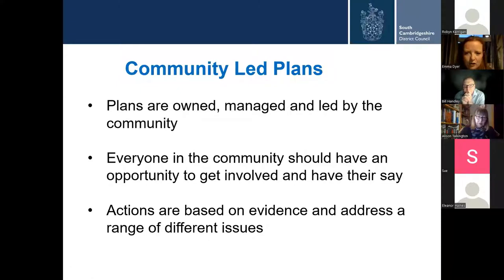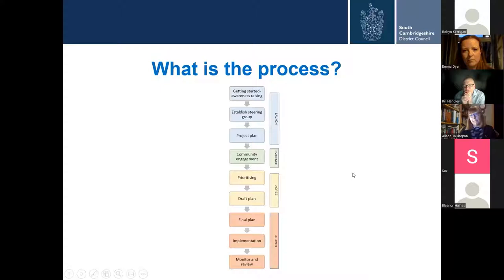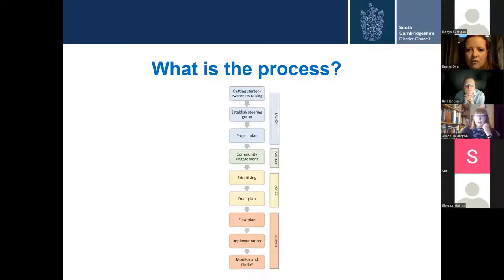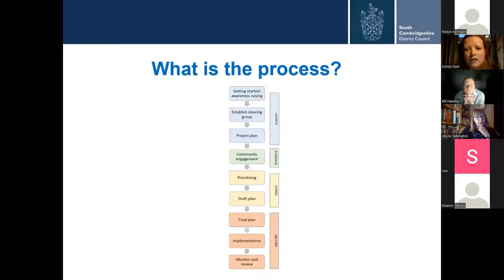The third principle is that it offers a structured process that can be used by your community to address a range of different issues. The plan could aim to achieve anything within reason — from organising regular litter picks, buying a fridge for a community café, through to setting up an environmental group. This diagram shows the process to producing a community-led plan, first put together by ACRE, which is known as Action for Communities in Rural England. I'll go through each of these steps in turn.